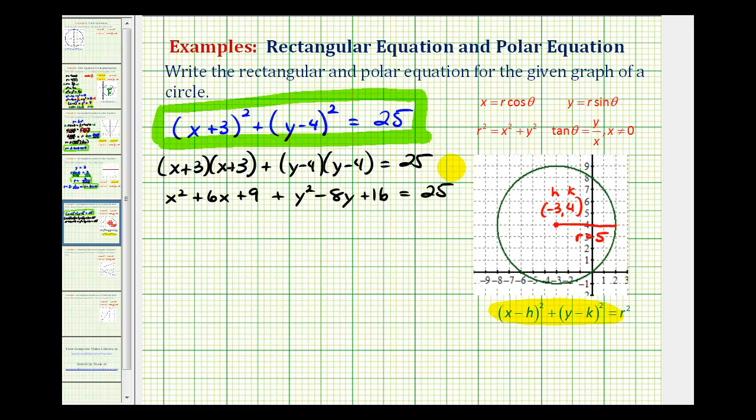Now let's simplify this and then we'll use these equations here that relate polar and rectangular coordinates to perform substitution to determine the polar equation. So I'm going to write this as x squared plus y squared plus six x minus eight y, and then nine plus 16 is equal to 25.